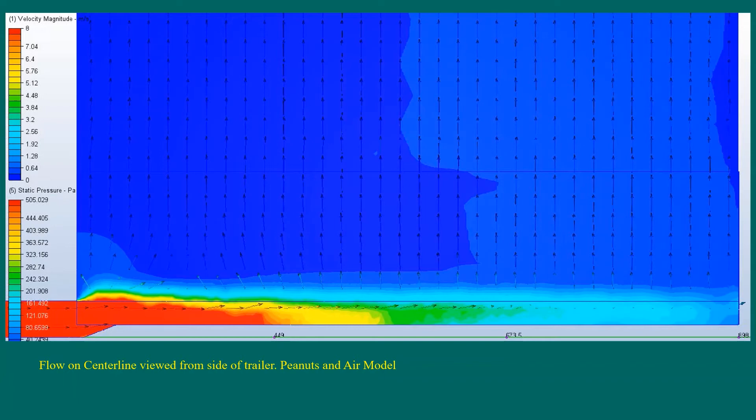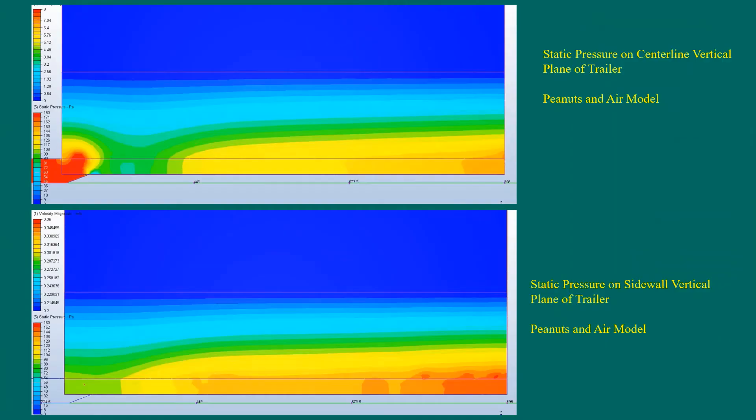Looking from the side at the flow on the vertical plane through the center line of the trailer, you see flow in the plenum and peanuts set to the base permeability. Fast flow is seen at the inlet, here dark red is 8 meters per second. The flow follows the path of least resistance, with the arrows showing flow traveling under the peanuts in the plenum until reaching the end wall. The flow slows down greatly on entering the peanuts and is redirected upward. The upward flow over the inlet is slower than the flow in the third of the trailer near the end wall. Such uneven flow would lead to unevenly dried peanuts.